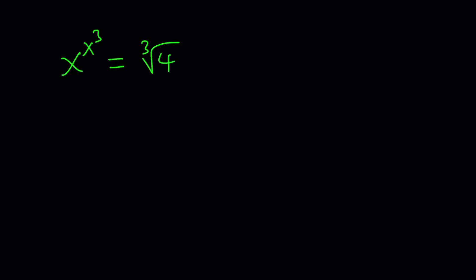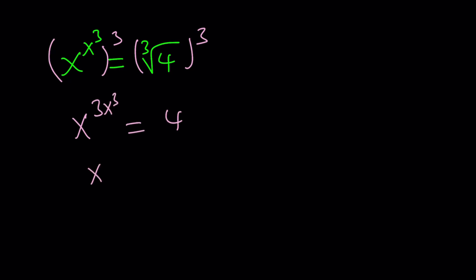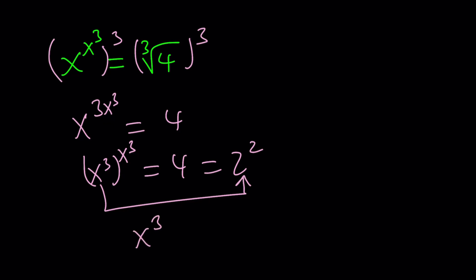But before solving, let me show you a simpler case. What if we had x to the power x to the power 3 equal to the cube root of 4? You could easily cube both sides, giving you x to the power 3x cubed equals 4. Then put the 3 inside to write x cubed to the power x cubed equals 4, which is 2 squared. So x cubed equals 2, meaning x equals the cube root of 2.